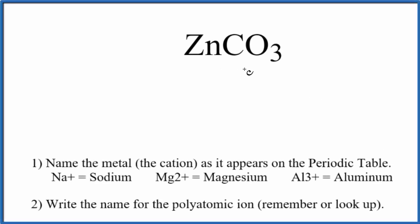To write the name for ZnCO3, we first need to recognize that we have this CO3 here, and it's a polyatomic ion. We also have a metal, the zinc. So we have a metal and a polyatomic ion.